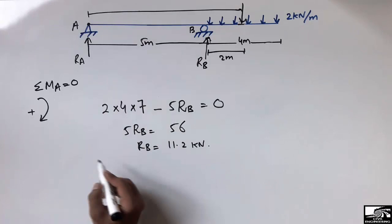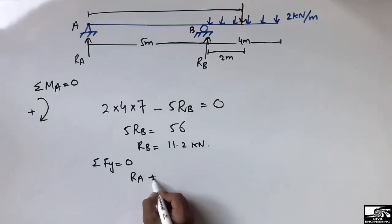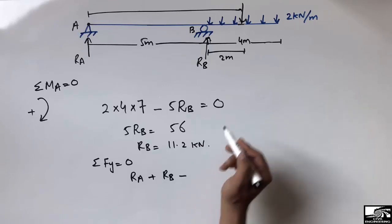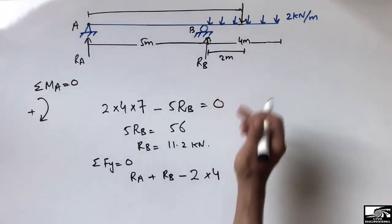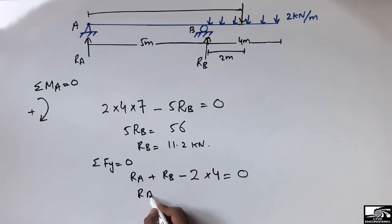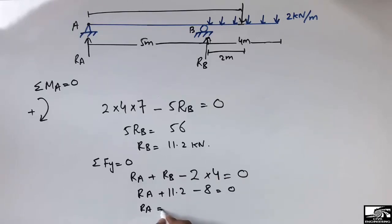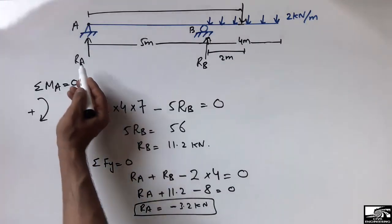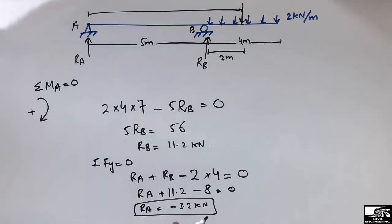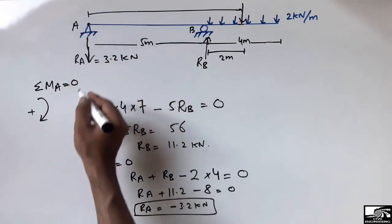To find RA, I use the summation of vertical forces equal to zero. RA and RB act upward, while the distributed load acts downward. The total distributed load is 2 × 4 = 8 kilonewton. So RA + 11.2 − 8 = 0, giving RA = −3.2 kilonewton. The negative sign means the assumed upward direction is wrong — RA actually acts downward.